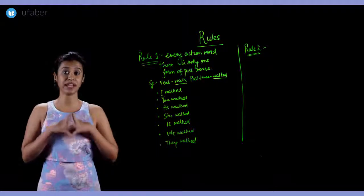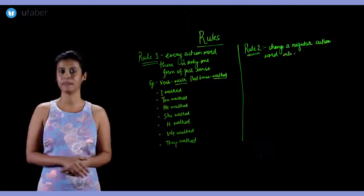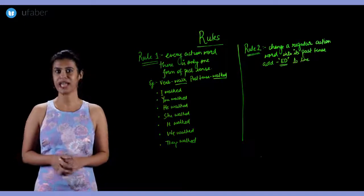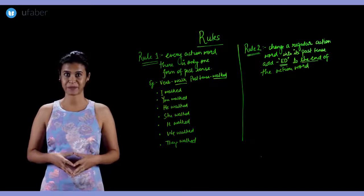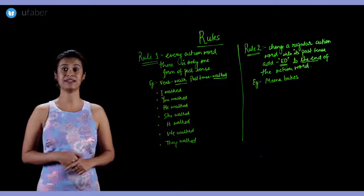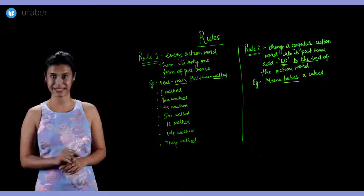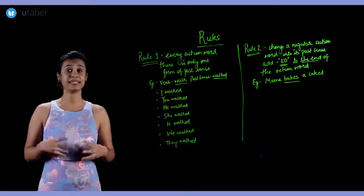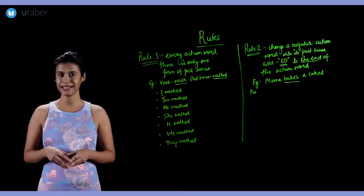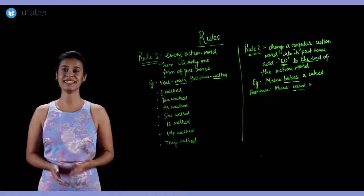Rule 2: to change a regular action word into its past tense form, we normally add -ed to the end of the action word. For example, 'Mina bakes a cake' — here the action word is 'bakes'. Now if we take it and make it into the past tense by adding -ed, it will be 'baked'.